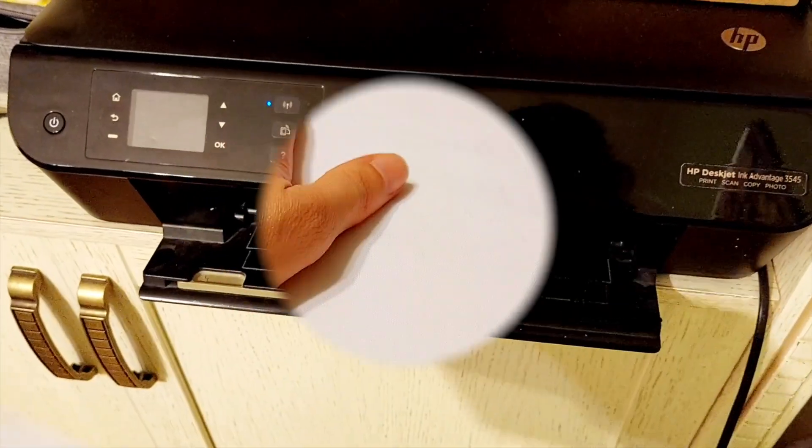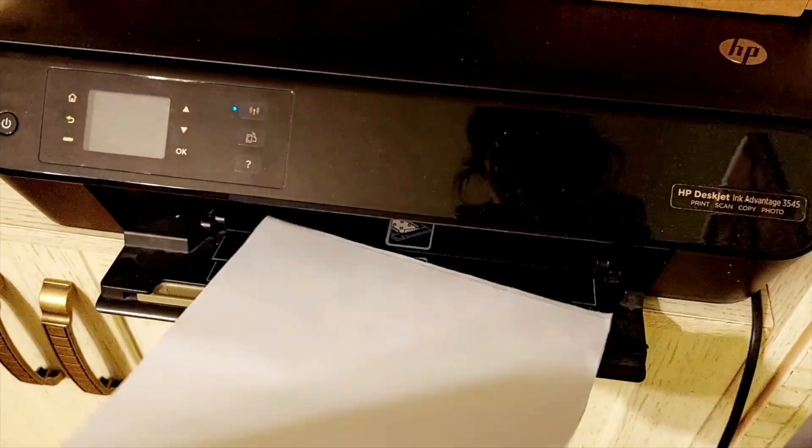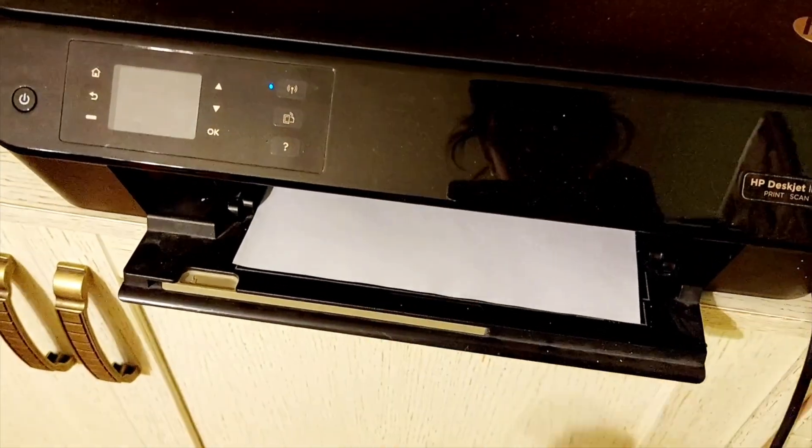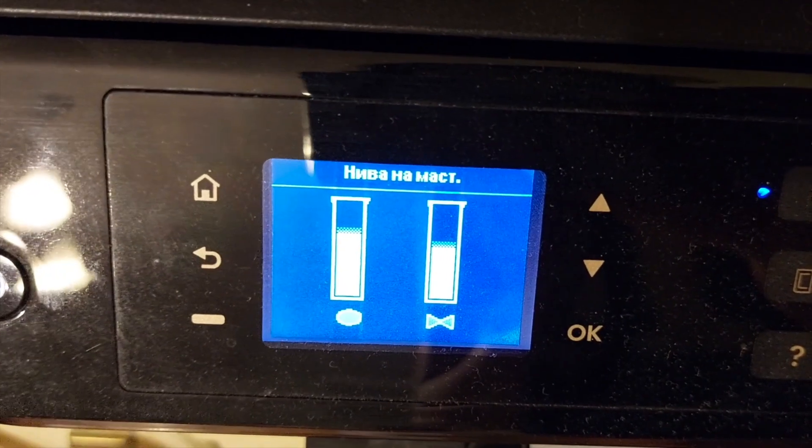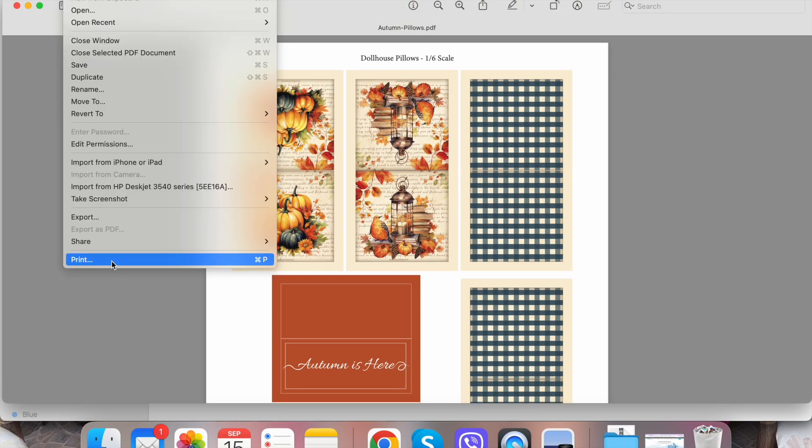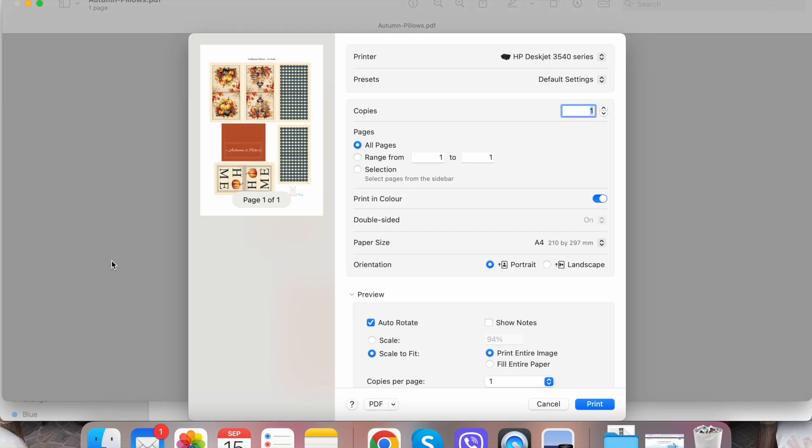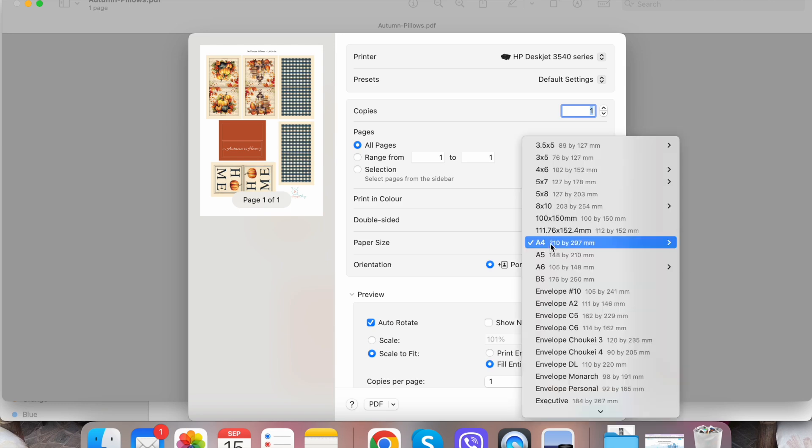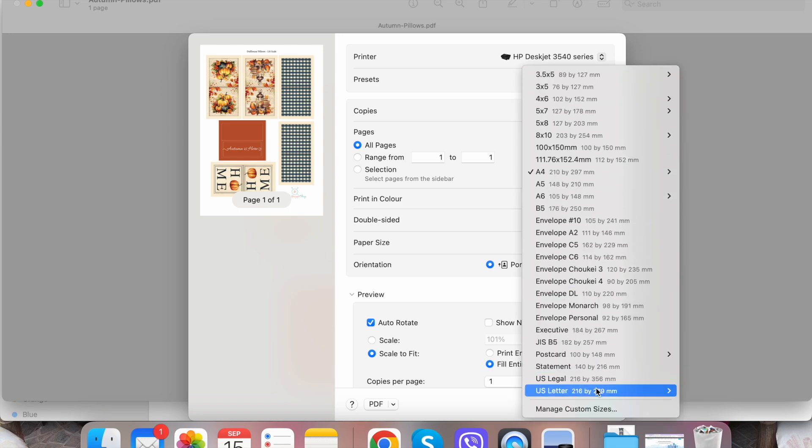Next put the sheet into the printer with the paper side facing up and the fabric underneath. Make sure there is enough ink. Open the PDF file on your computer, select file and then print. For scale you can choose either fill entire paper or 100%. Then select the size of the paper you are using, either A4 or US letter.